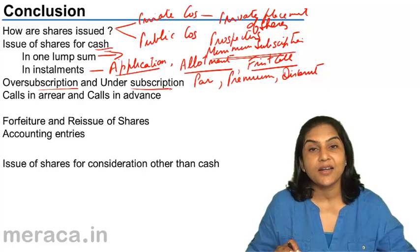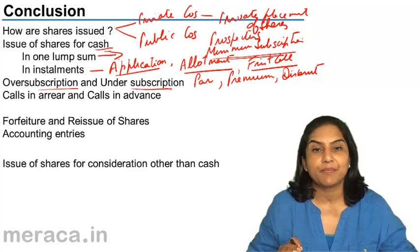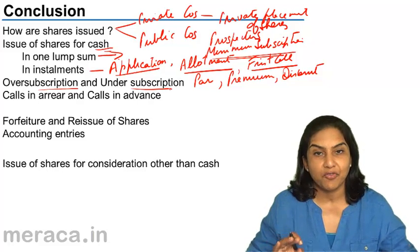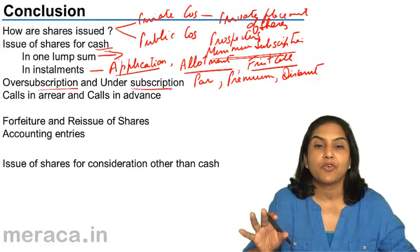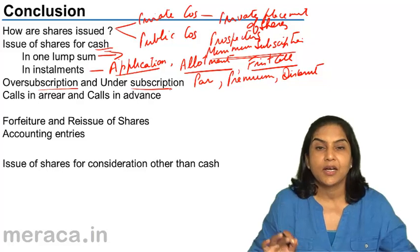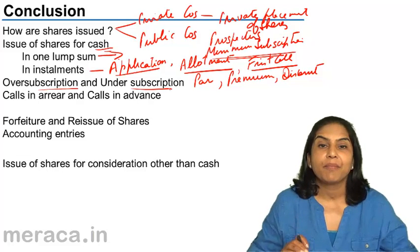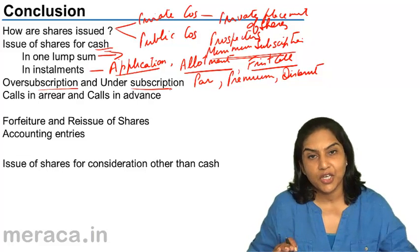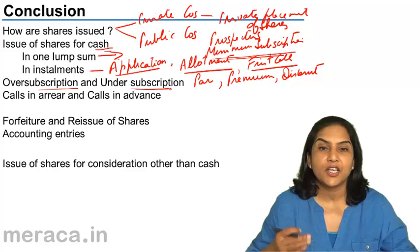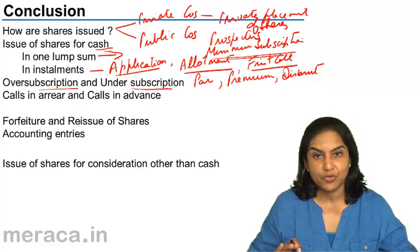On the other hand, under-subscription is when a company issues 10 lakh shares but the public subscribes for only 9.5 lakh shares. As mentioned, 90% of the issue must be subscribed for, as that is the minimum subscription laid down by SEBI. If that is not achieved, the issue falls through and the entire money must be refunded to the shareholders.